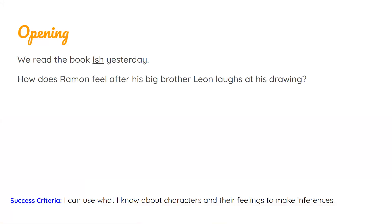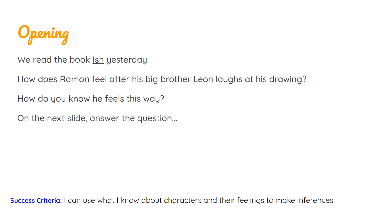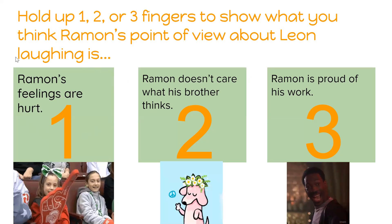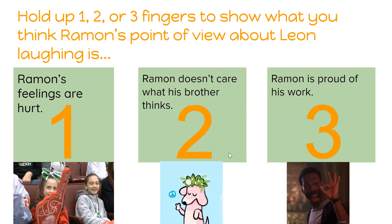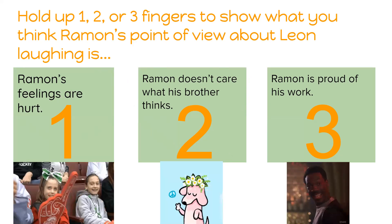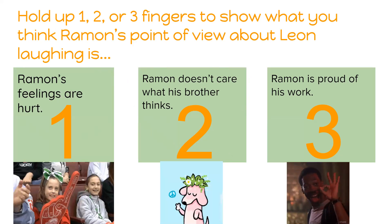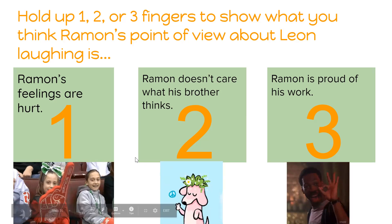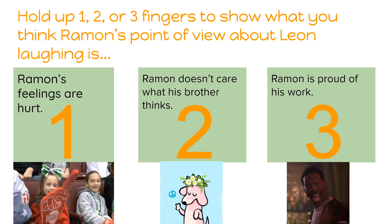Show me with your face. I see lots of frowns. You are correct. How do you know he feels this way? Think about that for a moment. On the next slide, we're going to answer a question. Hold up one finger if you think Ramon's feelings are hurt. Hold up two fingers if Ramon doesn't care what his brother thinks. Hold up three fingers if Ramon is proud of his work. The correct answer is one. Ramon's feelings are hurt, but it never tells us in the book that his feelings are hurt. I wonder how we know that.